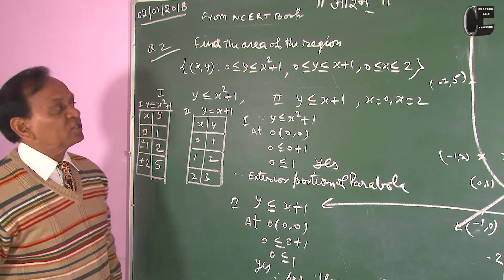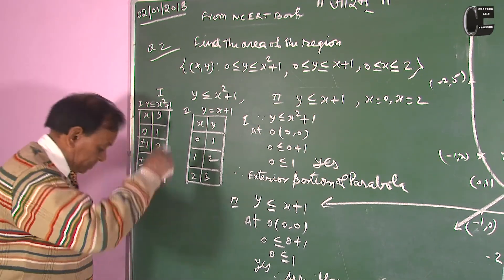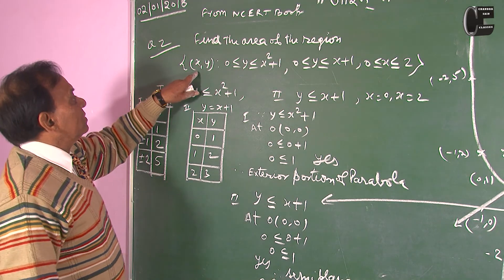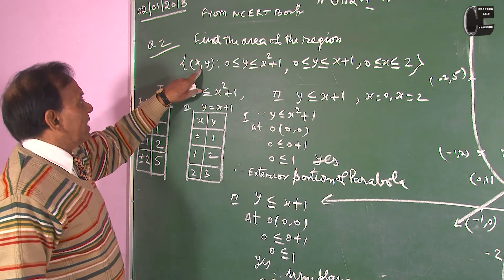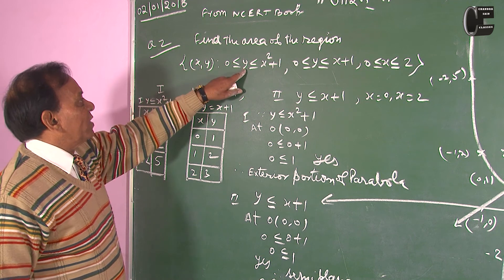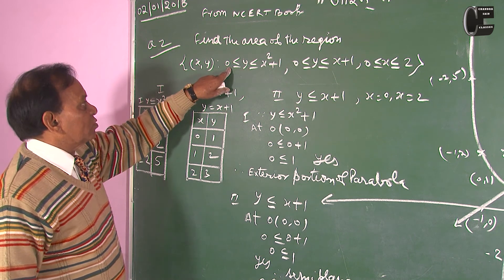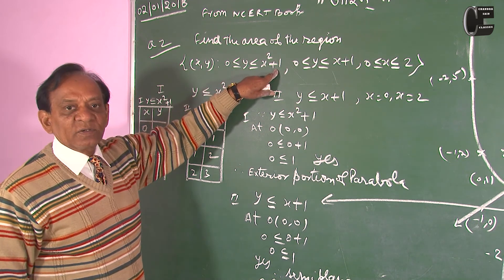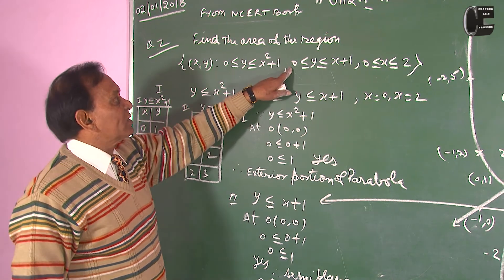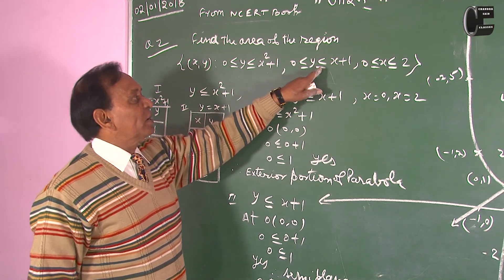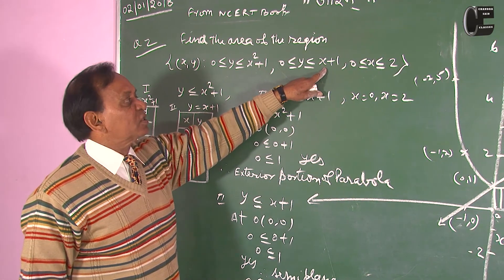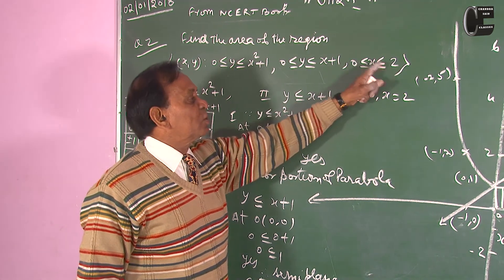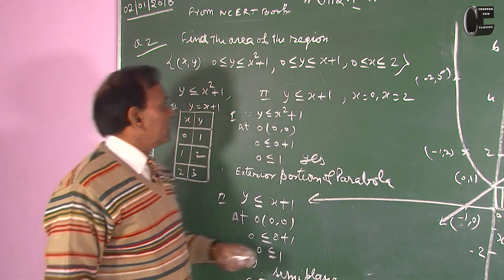This is also a question from NCERT. Find the area of the region — set of all (x, y) such that y is greater than or equal to 0 and less than or equal to x squared plus 1; similarly y greater than or equal to 0 and less than or equal to x plus 1; and x lies between 0 to 2.